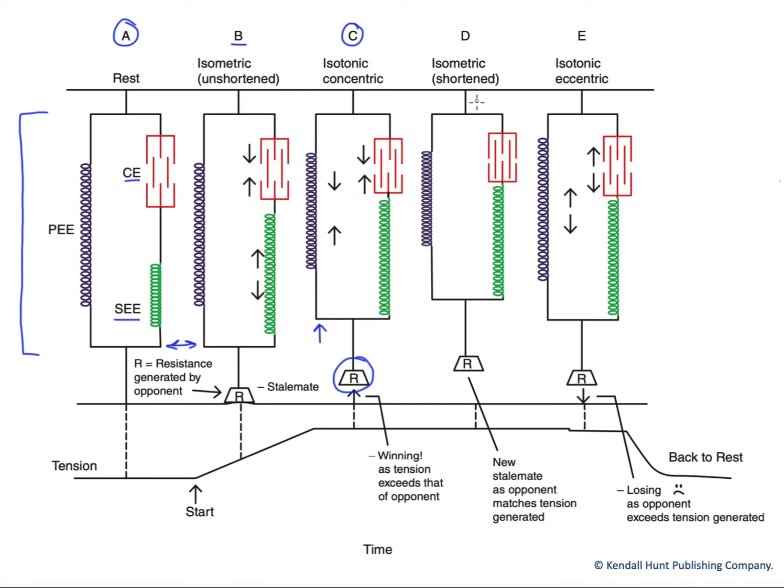Then our opponent tries a little bit harder, and we reach a stalemate again here in D. And so once again, we become isometric. Iso meaning same, metric meaning length. So we stop shortening again. But we're now in a shortened state. We still have tension on our series elastic. Our sarcomeres are still contracting. Our crossbridges are cycling, but they're not gaining ground on the thin filament. So we're sort of like grabbing and releasing and grabbing and releasing, but not shortening the sarcomeres.